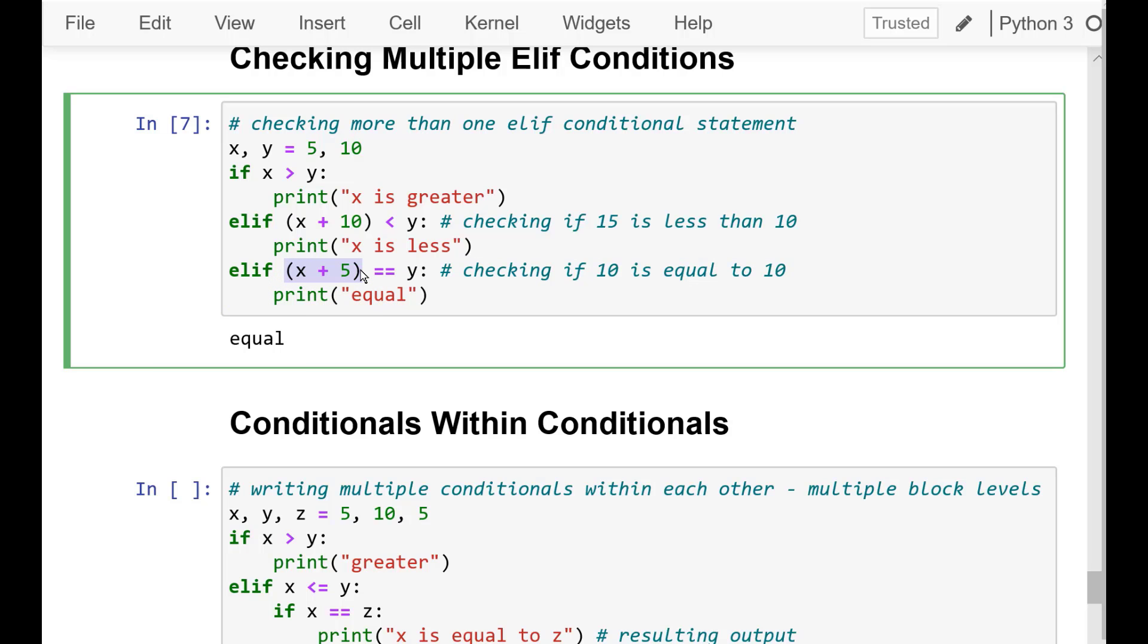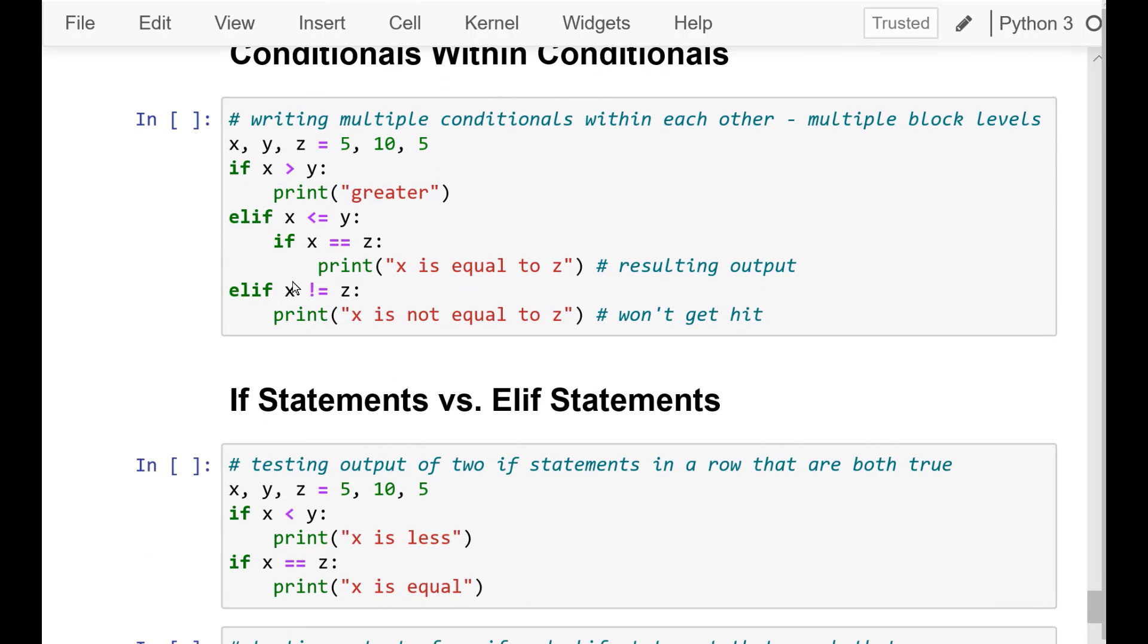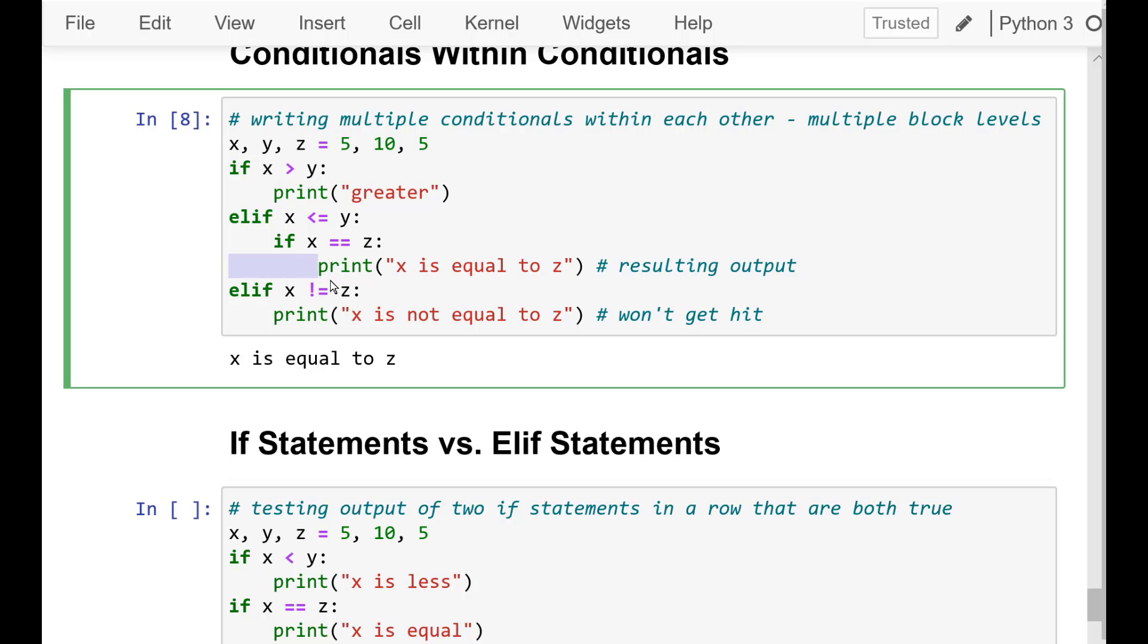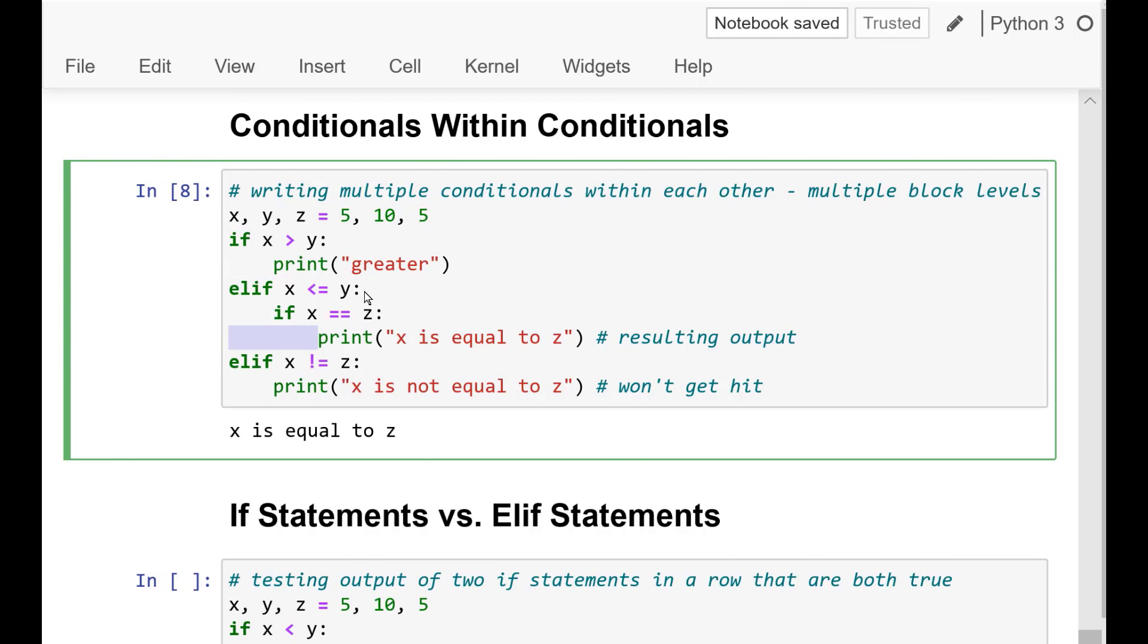We've gone over how Python uses indentation to separate blocks of code. So far we've only seen one indentation level. But what if we added an if statement within an if statement? Let's go ahead and run that cell. The output results in x is equal to z. To break it down, the initial if statement returns false and the next if statement returns true. So it runs that block.